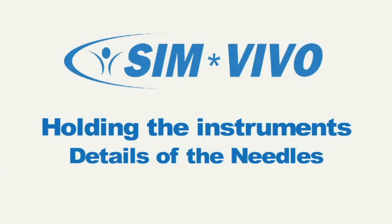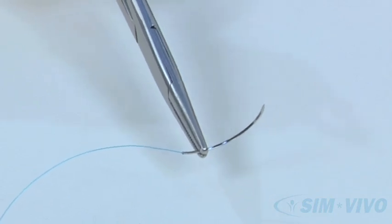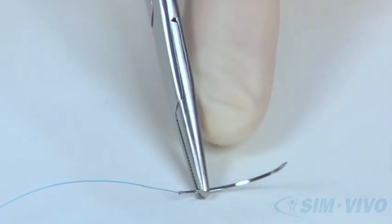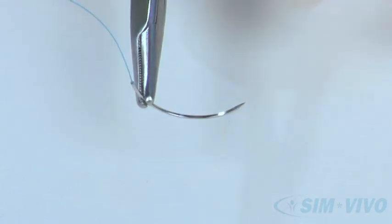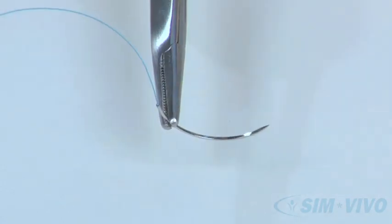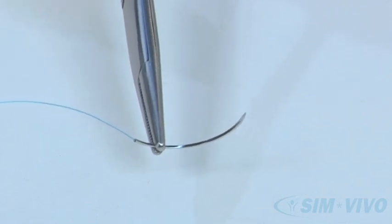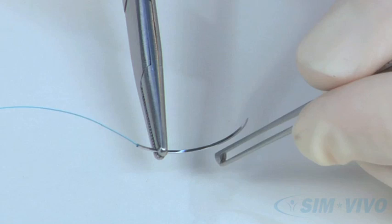Let's look at the needles provided with this module. Look carefully at the 3-0 nylon with the 30 millimeter needle. Note that it has a curve that is about 3 eighths of a circle. Also, note that the cross section of the needle is not round except right at the point where it is swedged onto the suture. Actually, the cross sectional shape of the needle is a triangle. Each corner of the triangle is slightly sharpened which allows it to easily traverse skin and fascia.